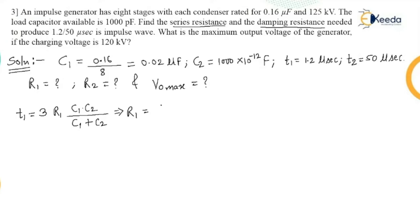Now T1 is 1.2 microsecond. So I am just converting each of the quantity in the regular unit. So this is 0.02 into 10 to the power minus 6. Now even you can convert this quantity in microfarad. I am keeping this as it is divided by 3 goes in denominator multiplied by C1 C2 also goes in denominator.